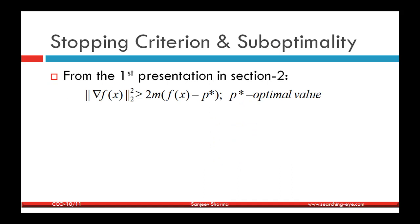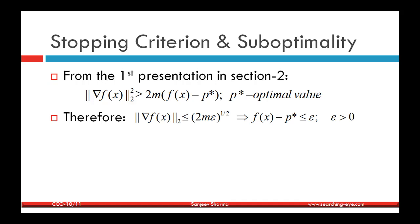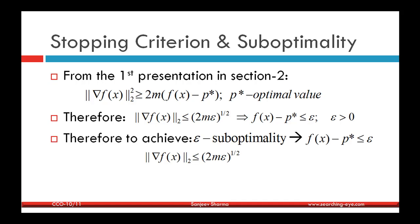From the first presentation, we have the inequality: the squared norm of the gradient is greater than or equal to 2m times (f(x) - p*), where p* is the optimal value. Therefore, if ‖∇f(x)‖ ≤ √(2mε), then f(x) - p* ≤ ε. A point satisfying f(x) - p* ≤ ε is called an ε-suboptimal point, and for this the norm of the gradient must be at most √(2mε).